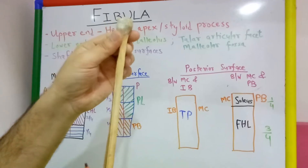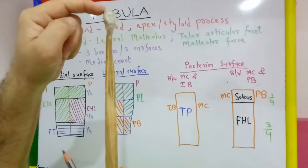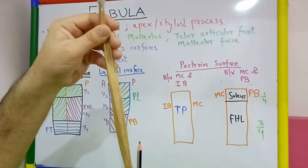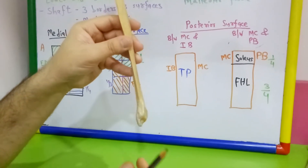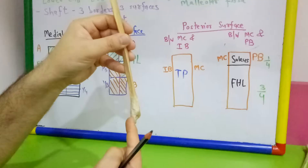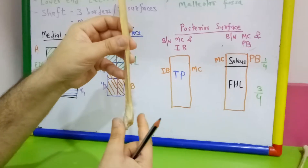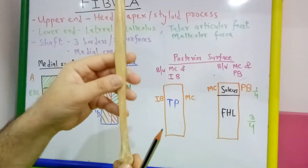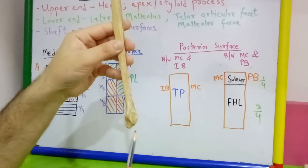So the upper end is slightly expanded in all directions, has an apex or styloid process from the posterolateral aspect, and a circular articular facet on the superior surface. In the lower end, it is flattened from side to side and expanded in the anteroposterior direction. The lower end is also known as the lateral malleolus. There are four surfaces in the lower end, of which the most important for side determination is the medial surface.